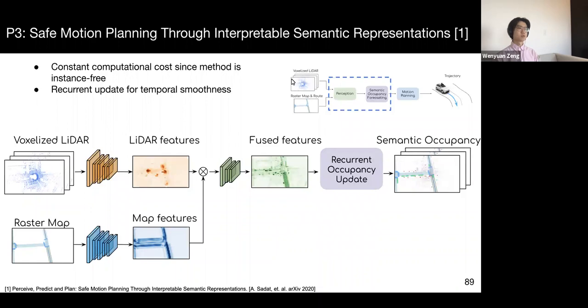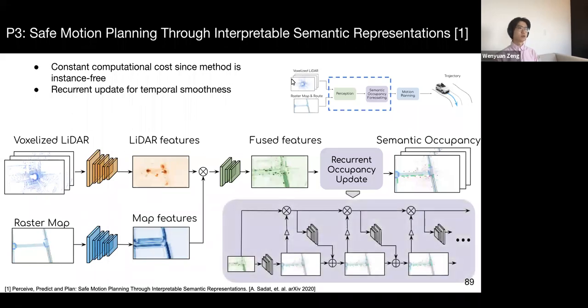In terms of inference process, we first take LiDAR sweeps and an HD map as input, and extract backbone features with a two-stream CNN backbone. Then, a recurrent occupancy update network predicts semantic occupancy into the future. As you can see, there is no post-processing at the detection level. This is beneficial since the computation cost doesn't increase in more cluttered scenes.